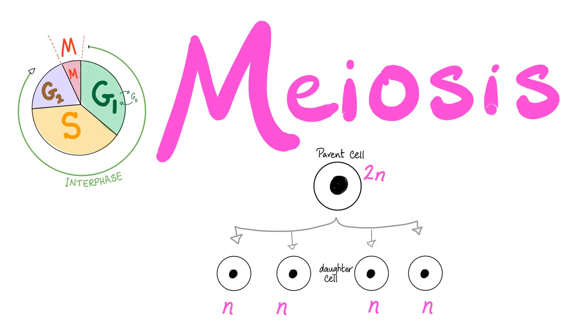Hey guys, it's Medicosis Perfectionelis, where medicine makes perfect sense. We continue our Biology in Cat playlist. In the previous video, we discussed mitosis. Today, it's time to talk about meiosis, which is important to make gametes for your ovaries or your testicles.